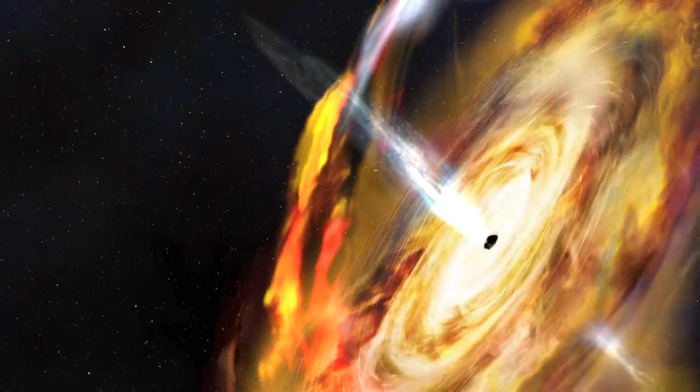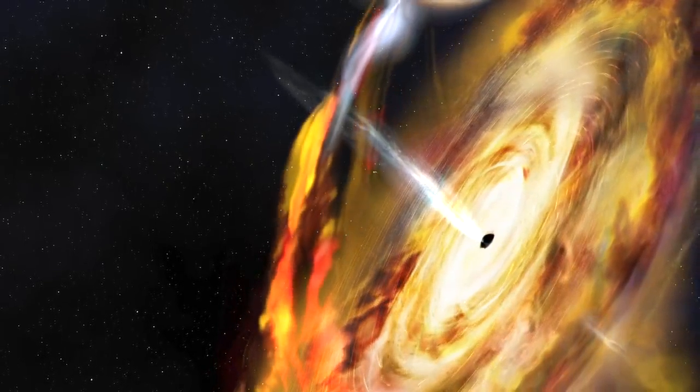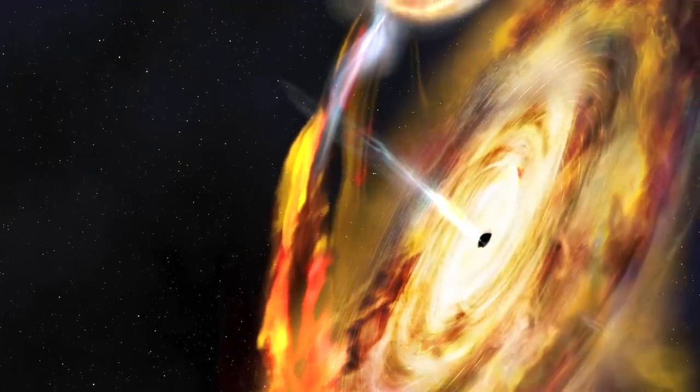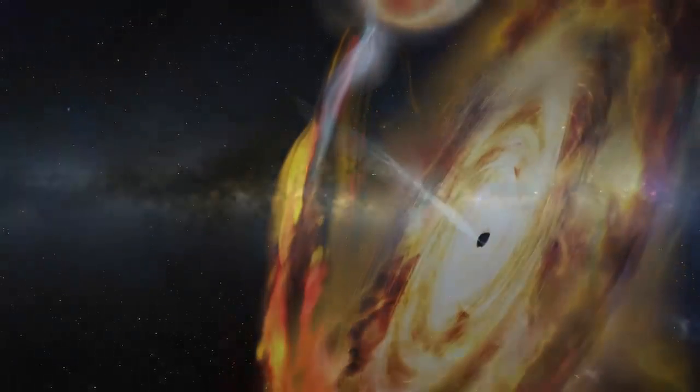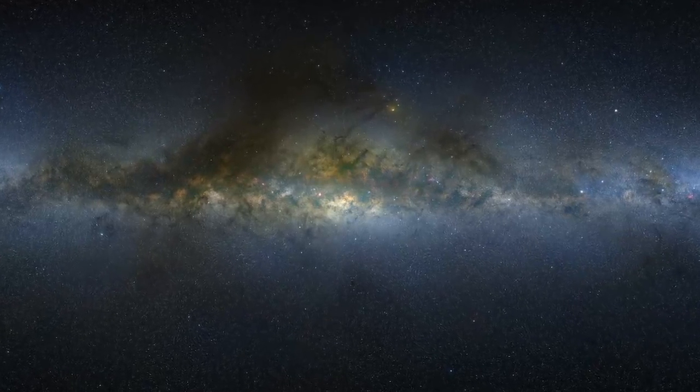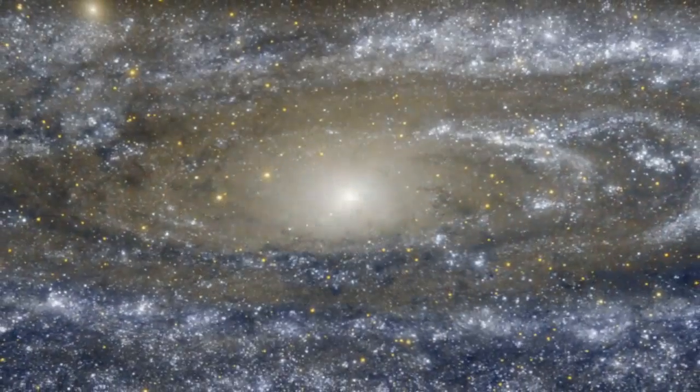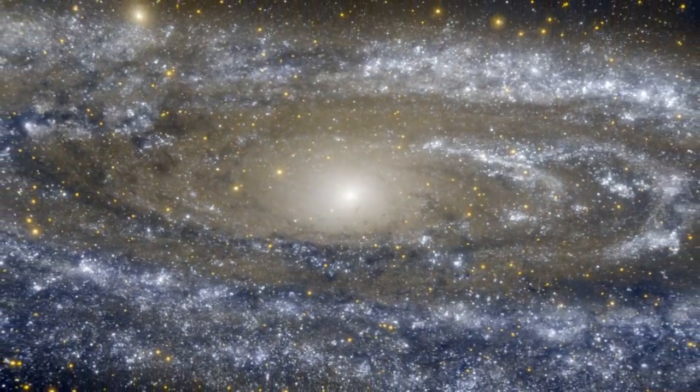The discovery reveals that stellar mass black holes behave similarly to their supermassive cousins, which are millions to billions of times the sun's mass. Those monster objects are found in the hearts of most galaxies, like our Milky Way, but their slower evolution over millions or billions of years is impossible to detect on human timescales.